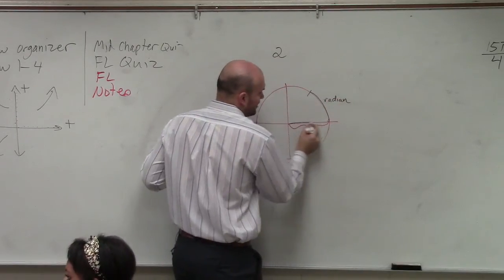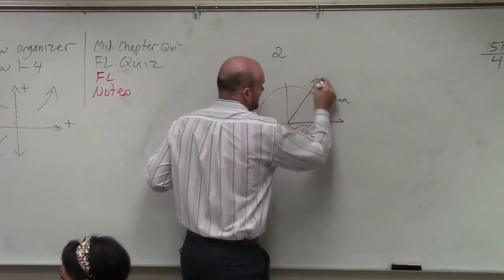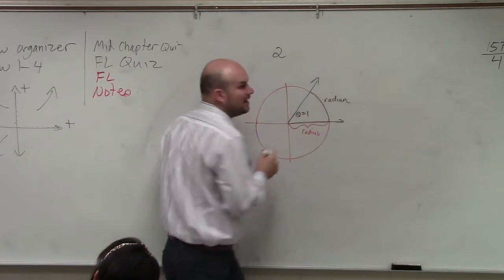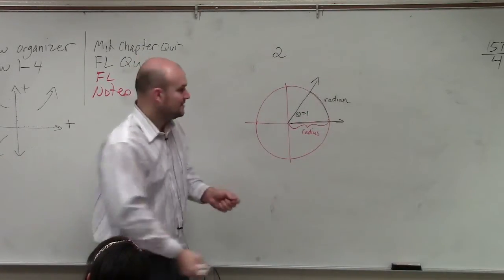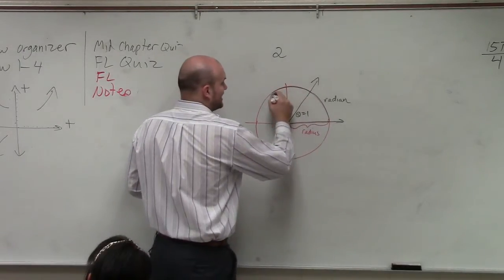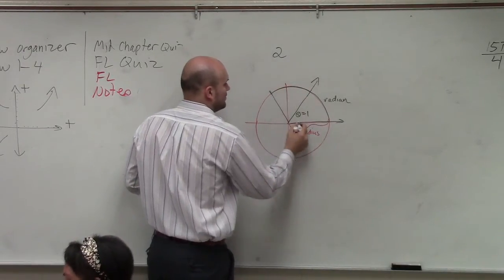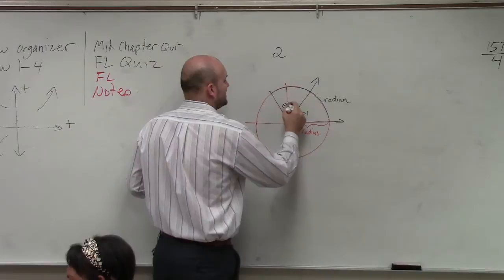So if you rotate your angle from here to here, theta is 1, as in one radian. So if I do two radians from here to here, theta equals 2.